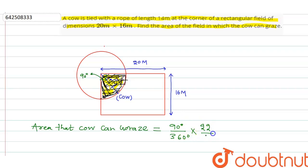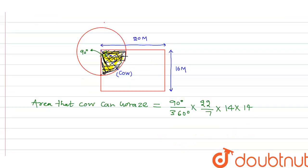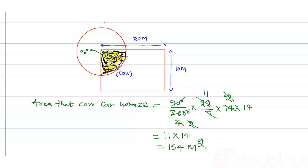So we get: this is 4, this is 2, this is 11. The area is 11 × 14, which equals 154 square meters. So this is your answer. Thank you.